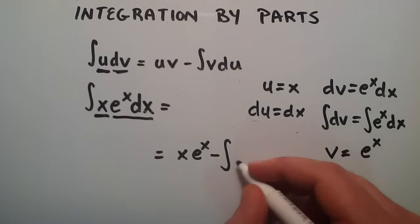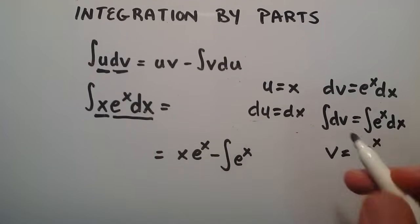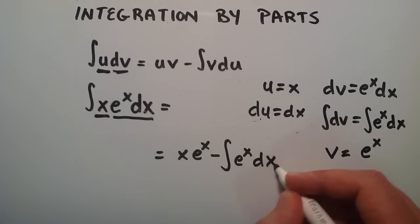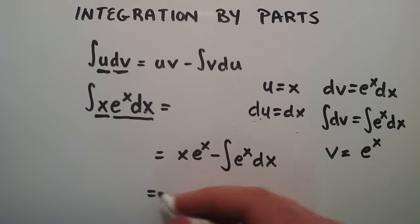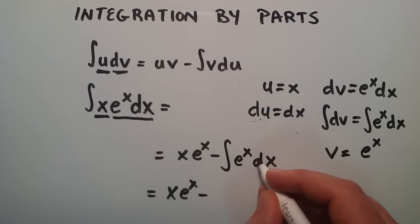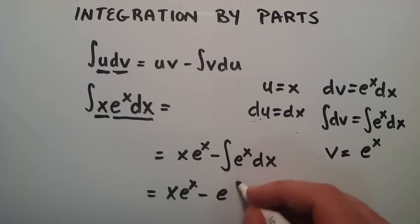And then we subtract the integral of v times du. v was e to the x, and du was dx. So this simply becomes x times e to the x minus the integral of e to the x with respect to x, which is simply e to the x. Then we can add our constant term here.